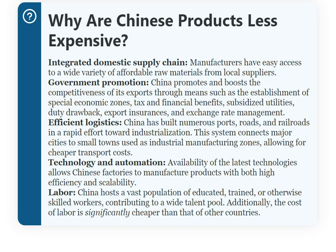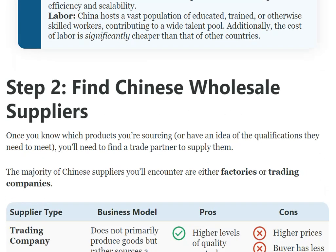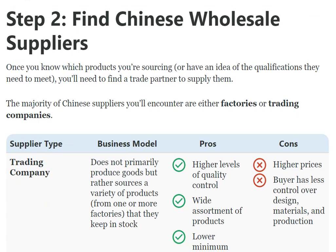Other reasons Chinese products are less expensive include integrated domestic supply chains, government promotions, efficient logistics, technology and automation, and skilled labor. Step two: find Chinese wholesale suppliers. Once you know which product you are sourcing, you'll need to find a trade partner to supply them.